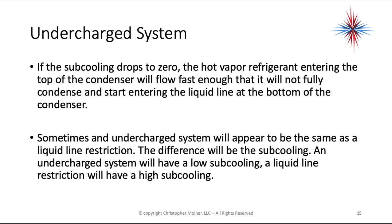If sub-cooling drops to zero, it means the hot vapor refrigerant entering the top of the condenser will flow fast enough that it will not fully condense and will start entering the liquid line at the bottom. An undercharged system will have low sub-cooling; a liquid line restriction will have high sub-cooling. That's the key difference between an undercharged system and a liquid line restriction.